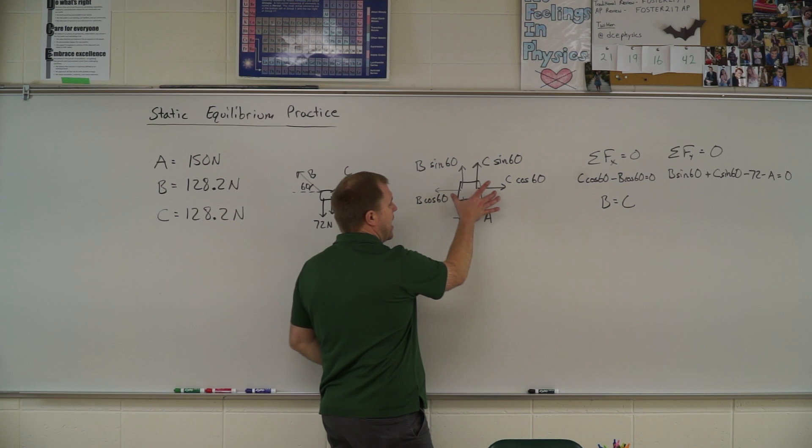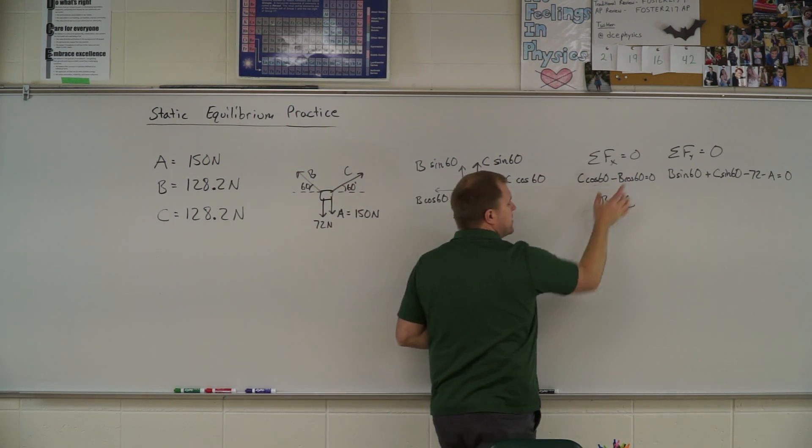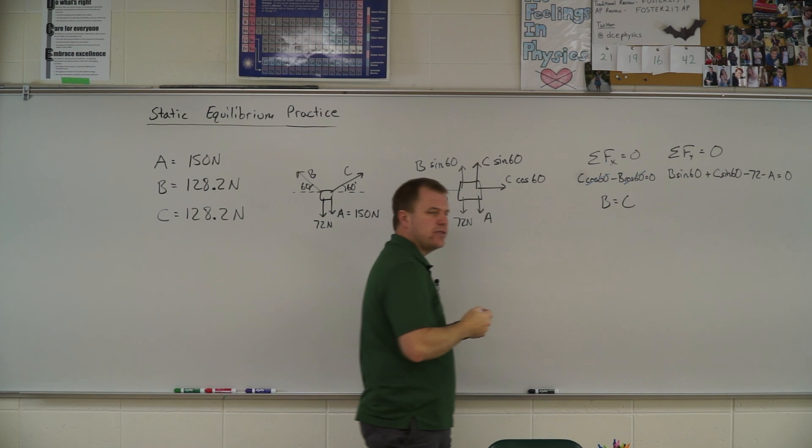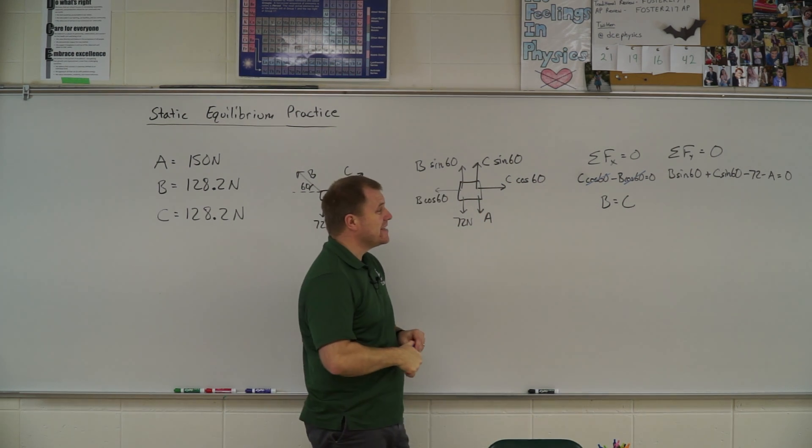I generate my equations, so I add up my X's to get zero because it's not accelerating. I see cosine of 60 cancels out of both of those and I'm left with B is equal to C.